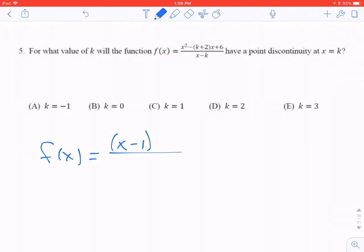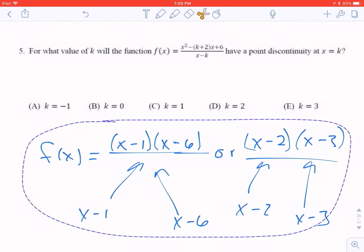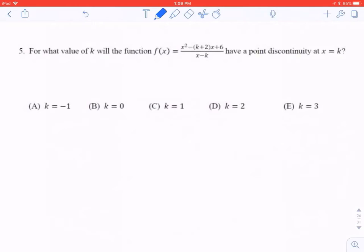That could factor in several ways. It could be x minus 1 and an x minus 6. Could factor into an x minus 2 and an x minus 3. Those are the only ways this could factor. So whichever way it factors means the denominator is either going to be an x minus 1 or an x minus 6 or an x minus 2 or an x minus 3. Personally, I think all that information is probably a little much for you. So here's how I'm going to do this. I'm just going to plug numbers in for k and see which one gives us the correct answer.